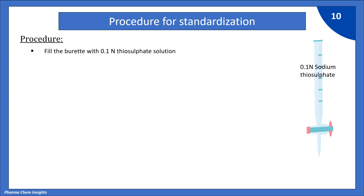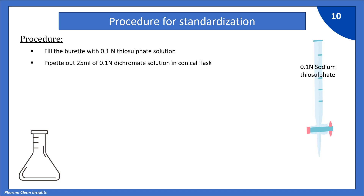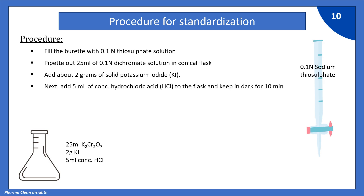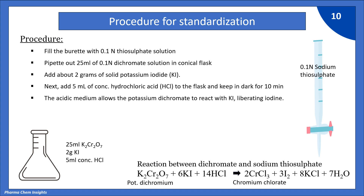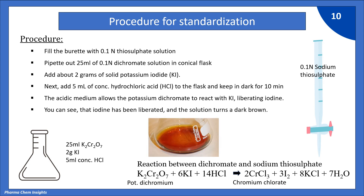Now let us see the procedure for standardization. First, fill the burette with 0.1 normal sodium thiosulfate solution. Then pipette out 25 ml of 0.1 normal potassium dichromate solution into a stoppered conical flask. Add about 2 grams of solid potassium iodide, then add 5 ml of concentrated HCl, mix, and keep in the dark for 10 minutes. The acidic medium allows potassium dichromate to react with KI, liberating iodine. K₂Cr₂O₇ reacts with 6 molecules of KI in acidic medium (HCl) to give CrCl₃ and 3 molecules of iodine.